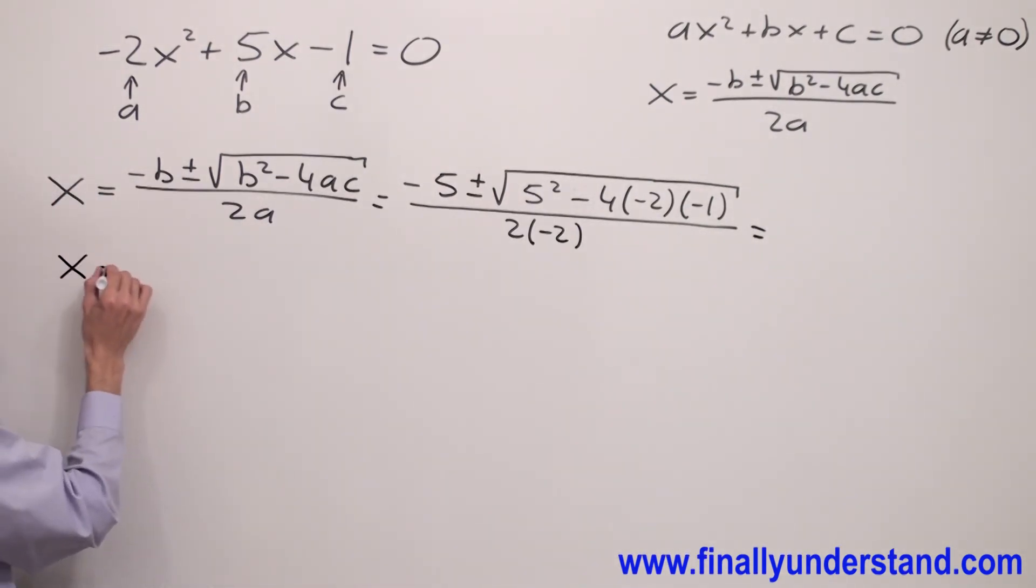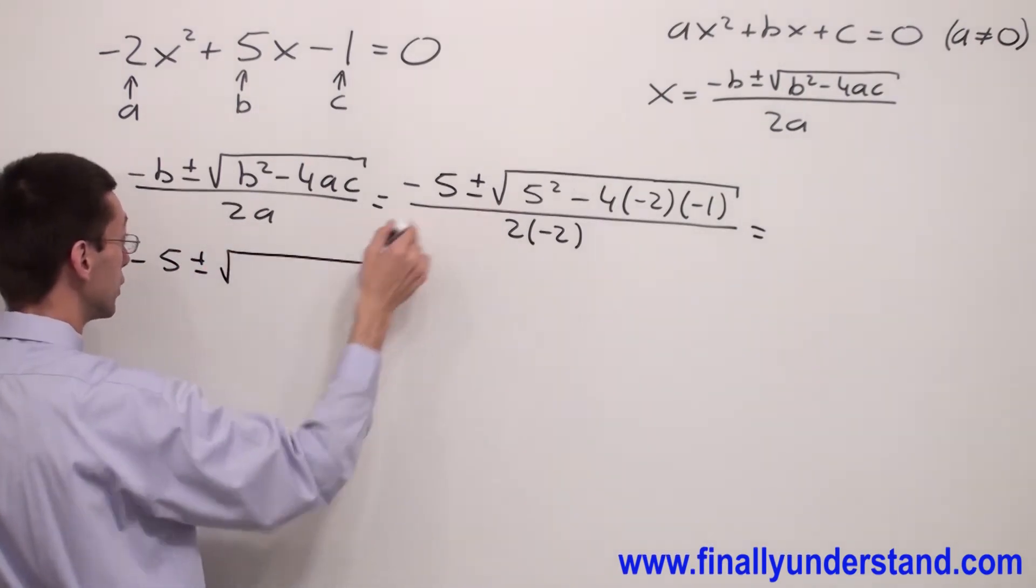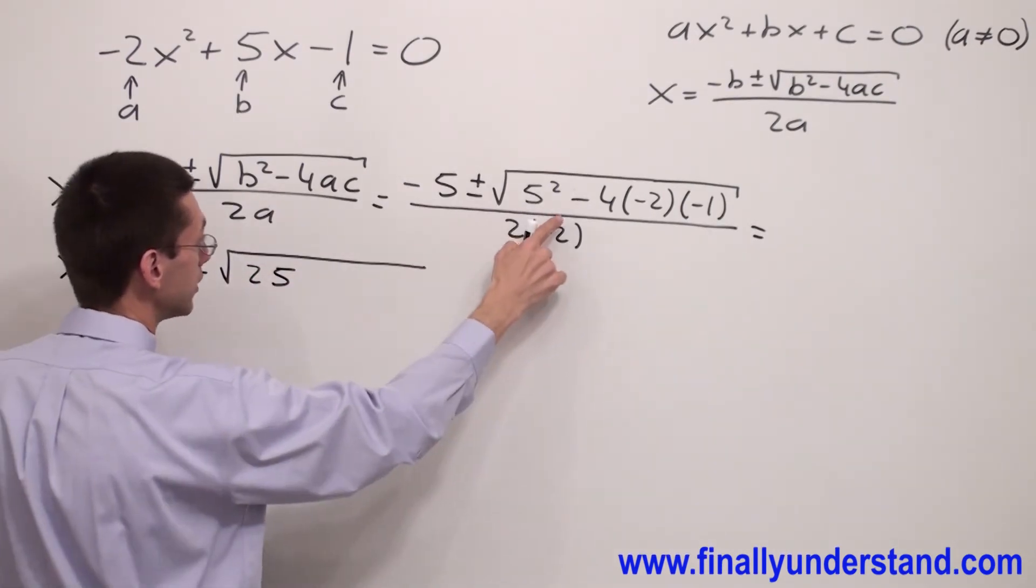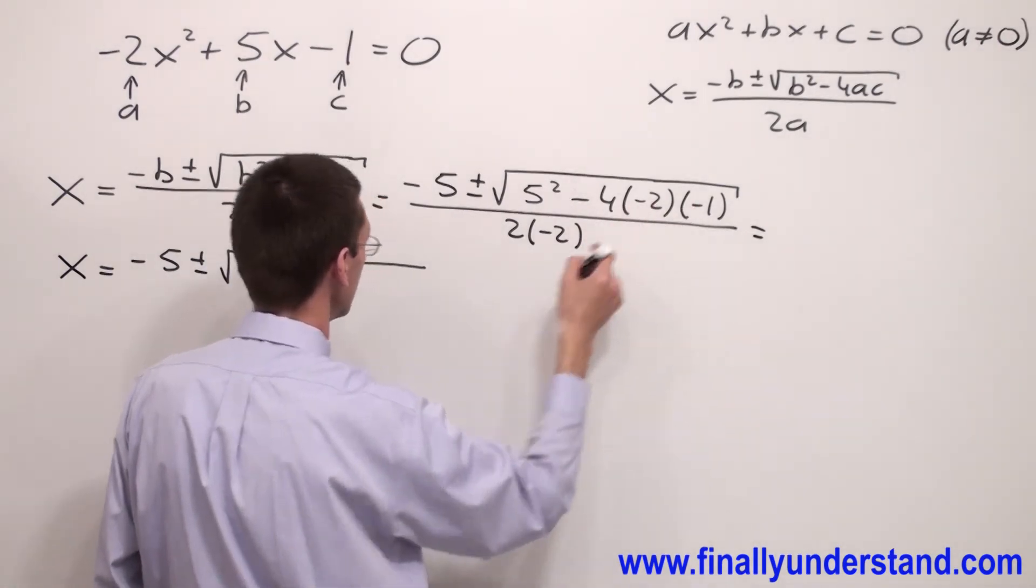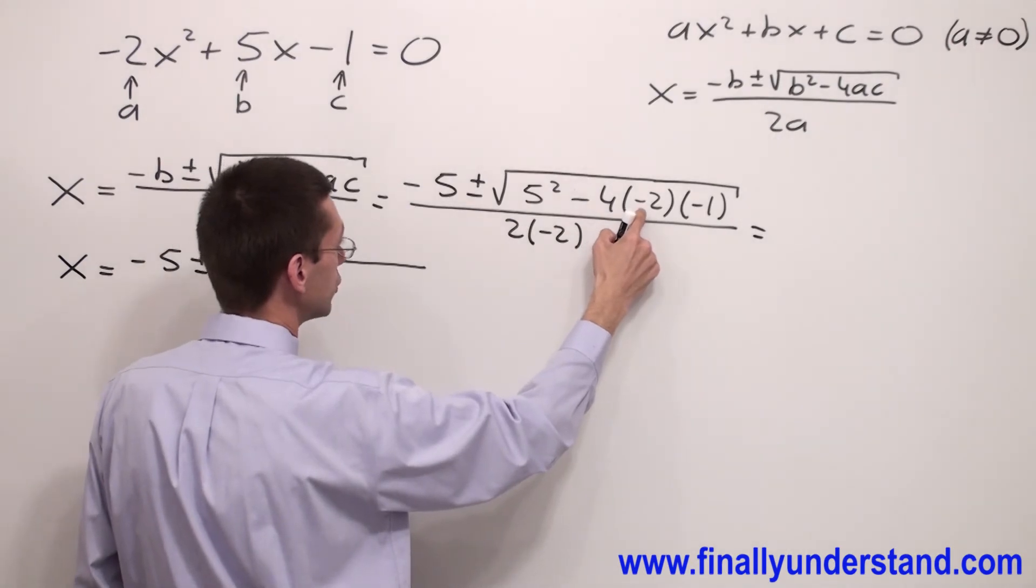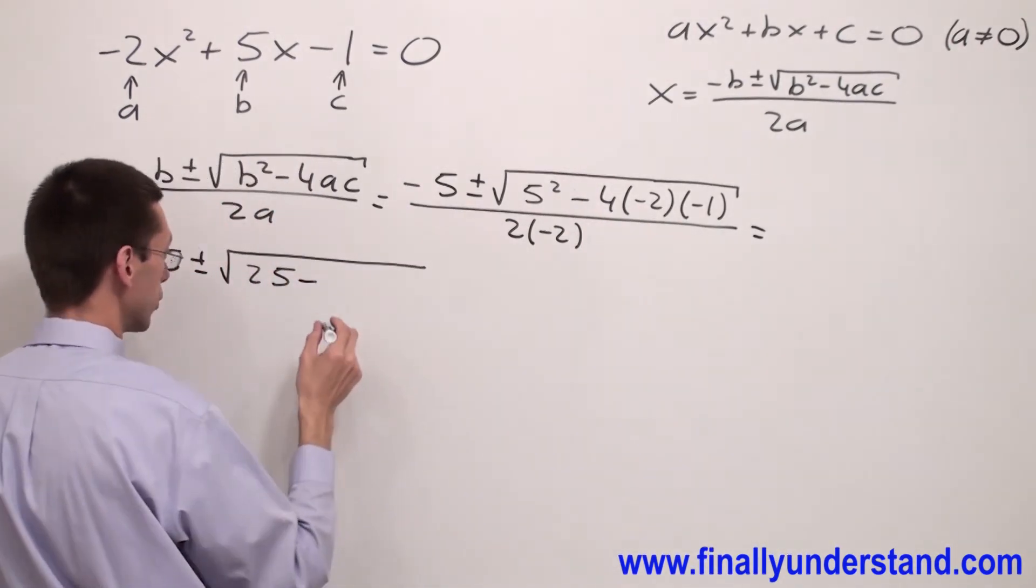Equals, we have x equals negative 5 plus minus square root of 5 to the second power is equal to 25. Negative times negative gives me positive, times negative gives me negative. 4 times 2 equals 8, times 1 equals 8.